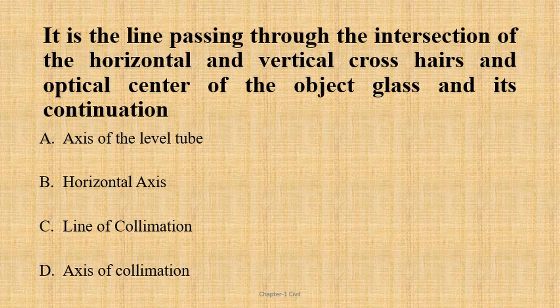It is a line passing through the intersection of the horizontal and vertical crosshairs and the optical center of the object glass and its continuation. Theodolite includes basic technical terms. The two confusing terms are the line of collimation and axis of the telescope.